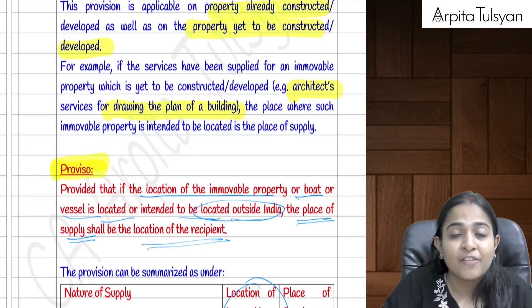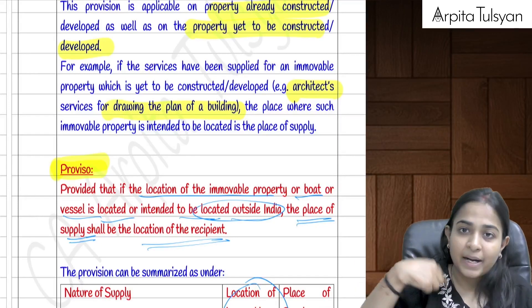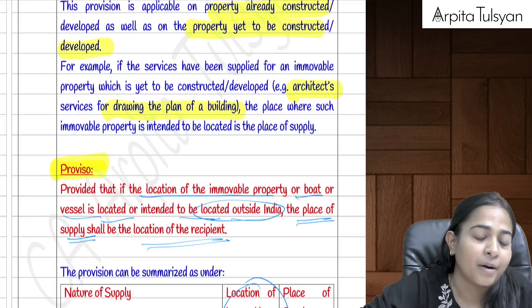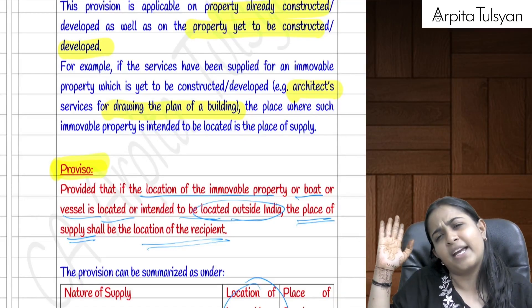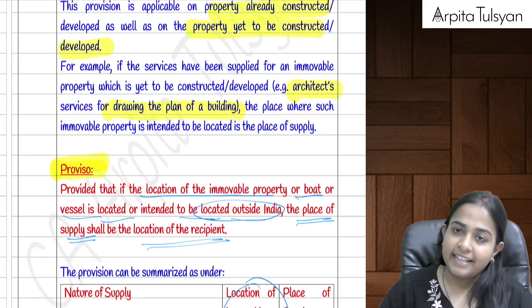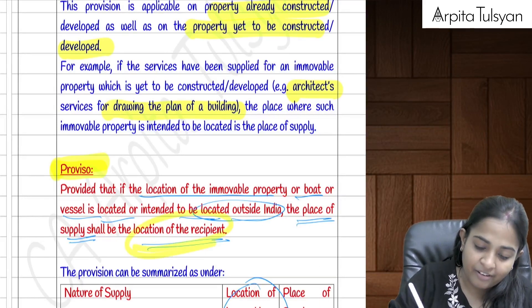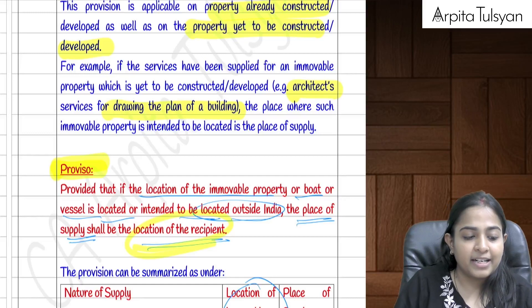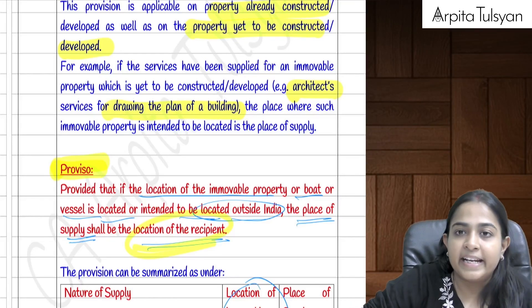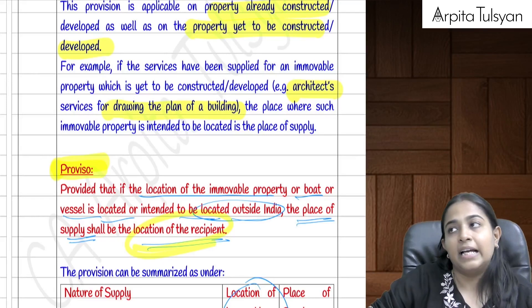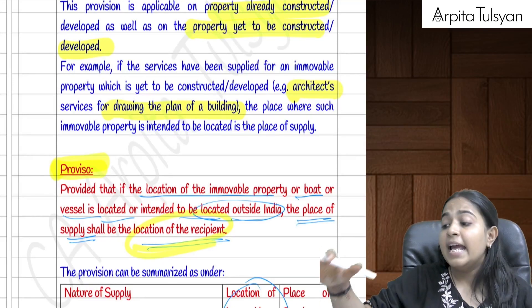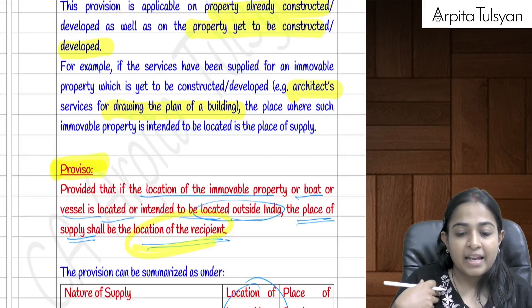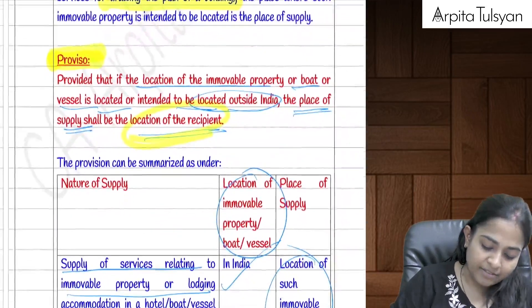However, since Section 12 applies only when both supplier and recipient are in India, if the immovable property is located outside India, the place of supply cannot be outside India. In such a case, the place of supply will be the location of the recipient.